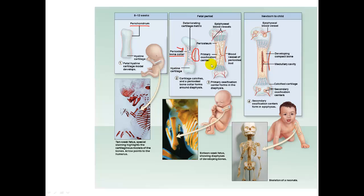In the third step, this is the formation of the primary ossification center. It happens with the periosteal bud, which is a growth of capillaries and osteoblasts. The osteoblasts produce the osteoid on the cartilage template to form the primary ossification center. Most primary ossification centers are formed by the twelfth week of development.